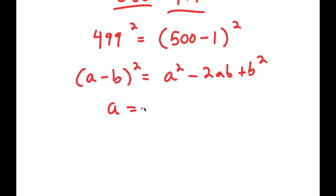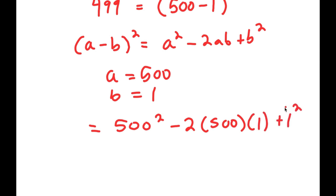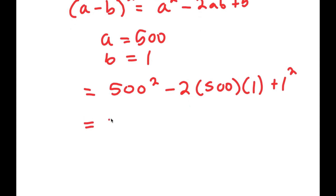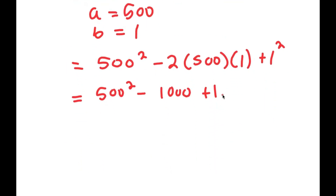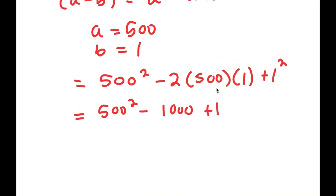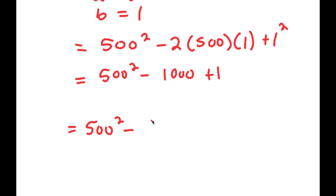In this case a is 500 and b is 1, so this turns into 500 squared minus 2 times 500 times 1 plus 1 squared. This simplifies to 500 squared minus 1,000 plus 1. Now we go back and replace 499 squared with this expression, so we get 500 squared minus (500 squared minus 1,000 plus 1) — and this is all in parentheses.